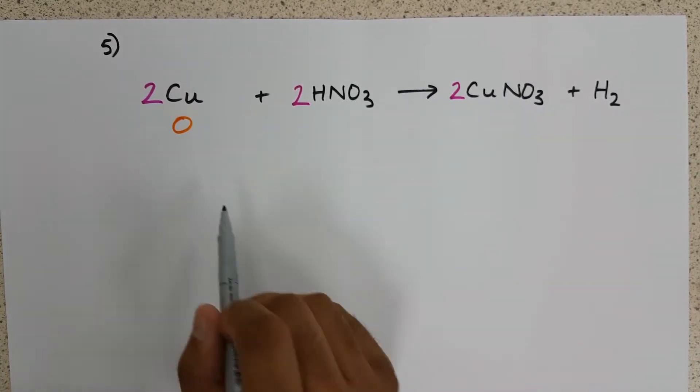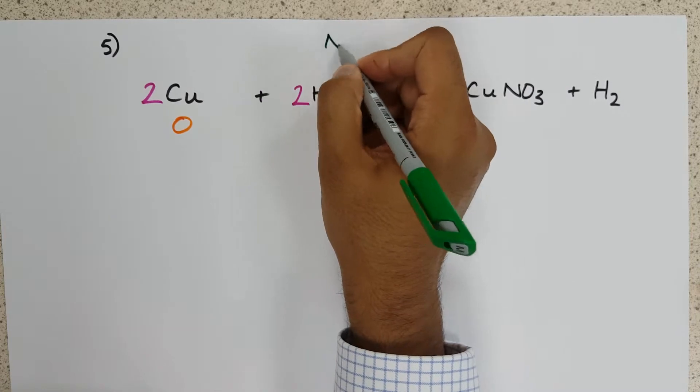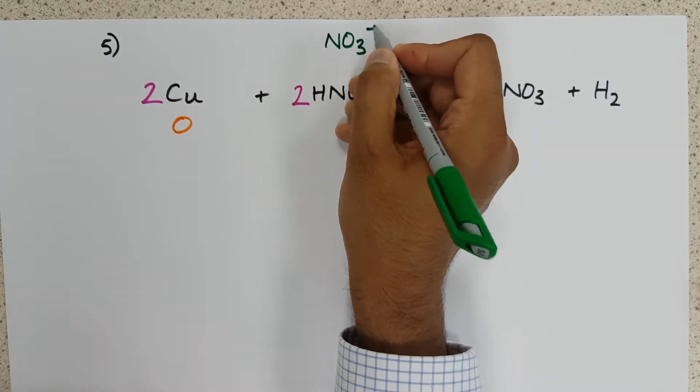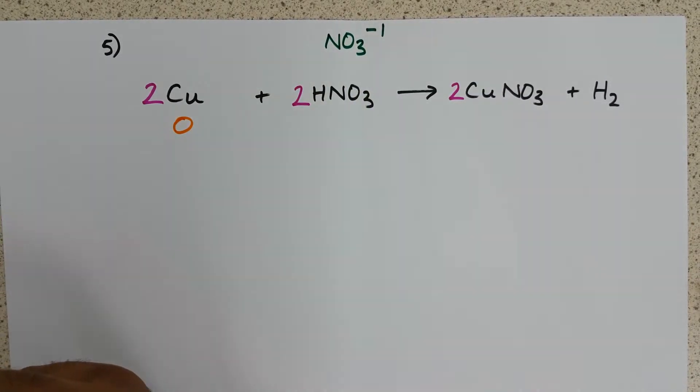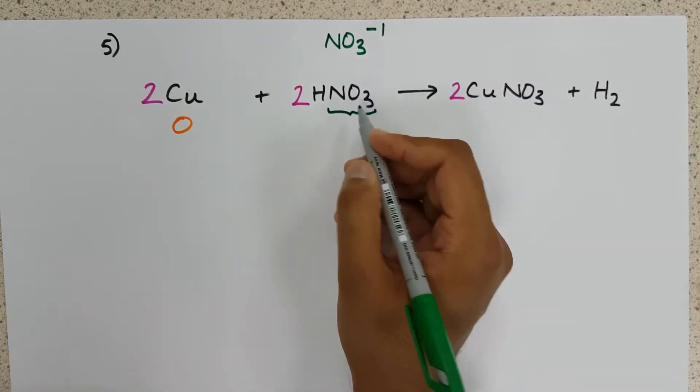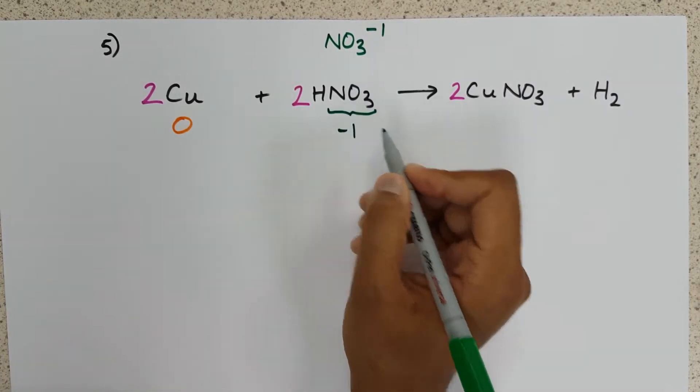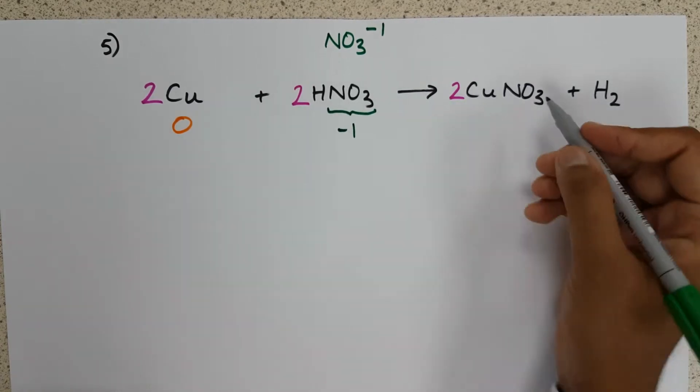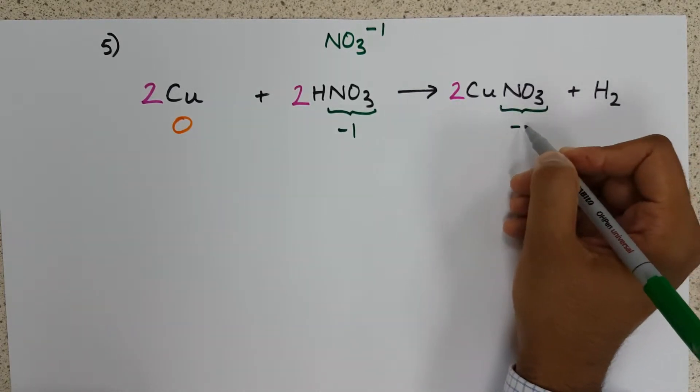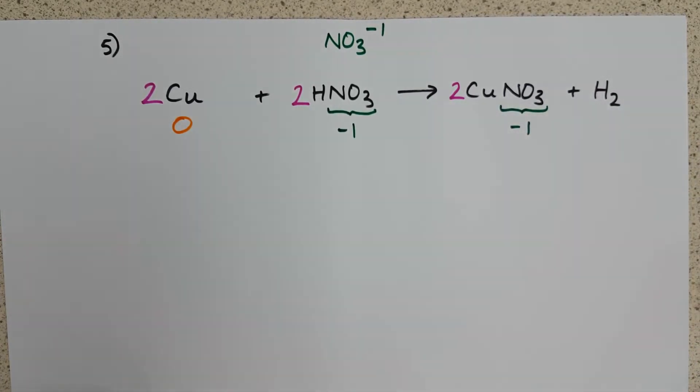The nitrate ion, it's one you will be expected to know for your course. It has a charge of minus one. So we can say that the oxidation state of nitrate, NO3, is minus one, and the same over on the right-hand side.